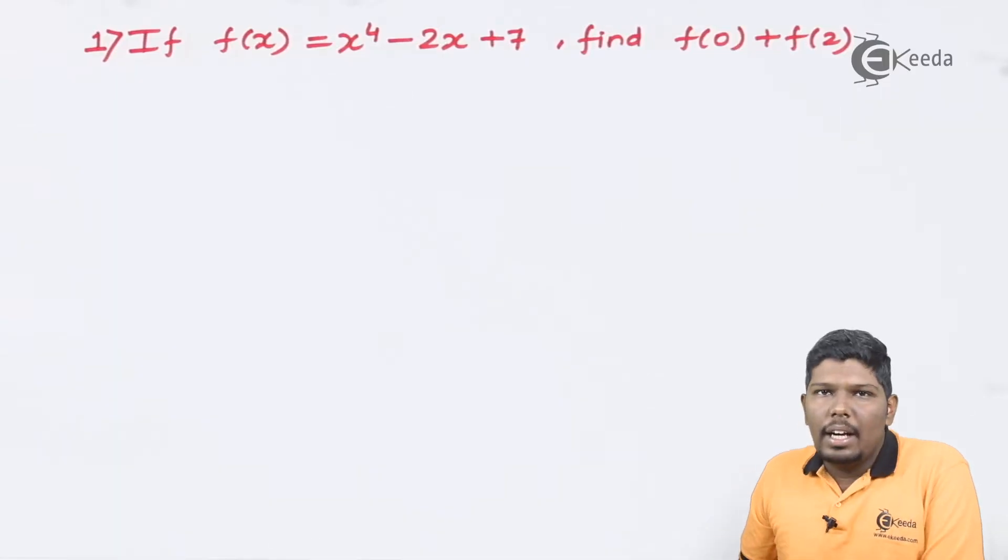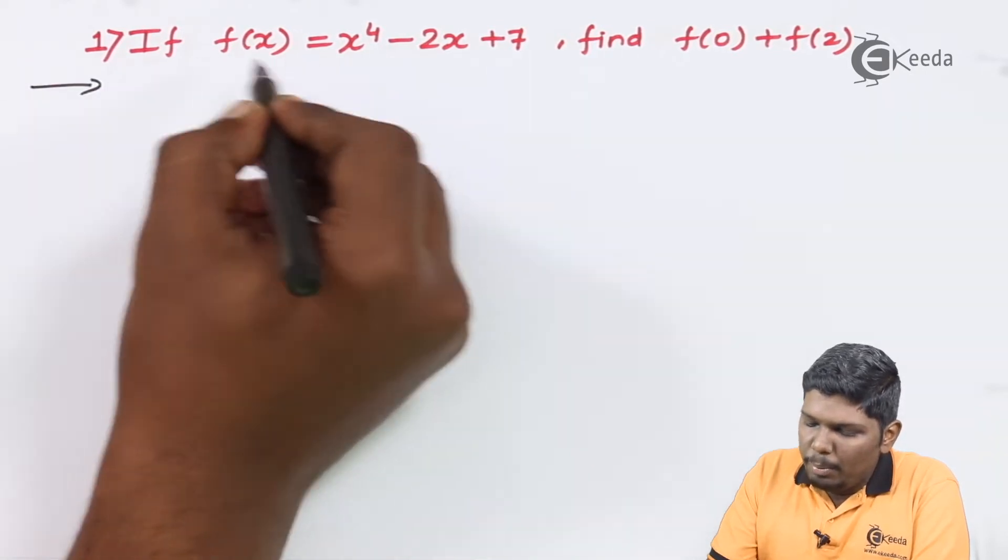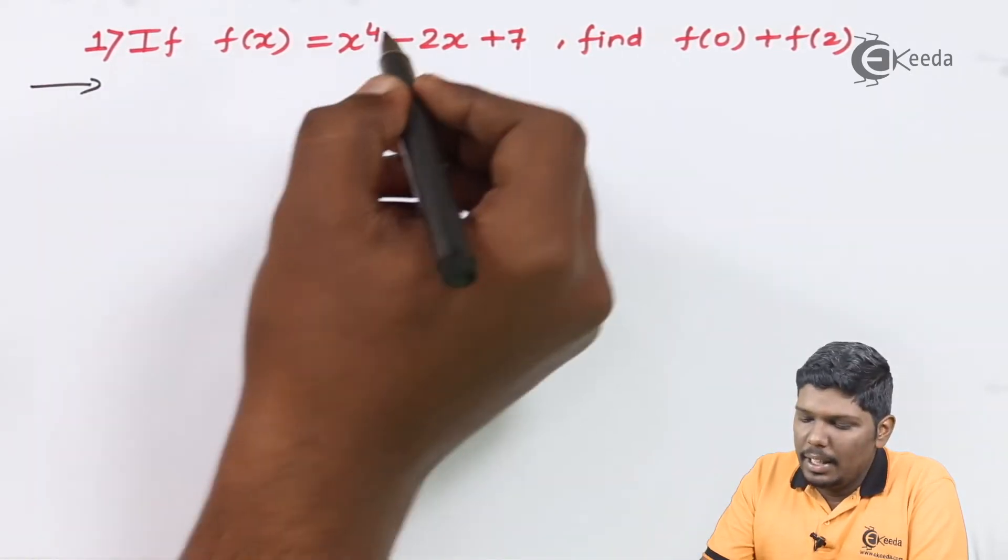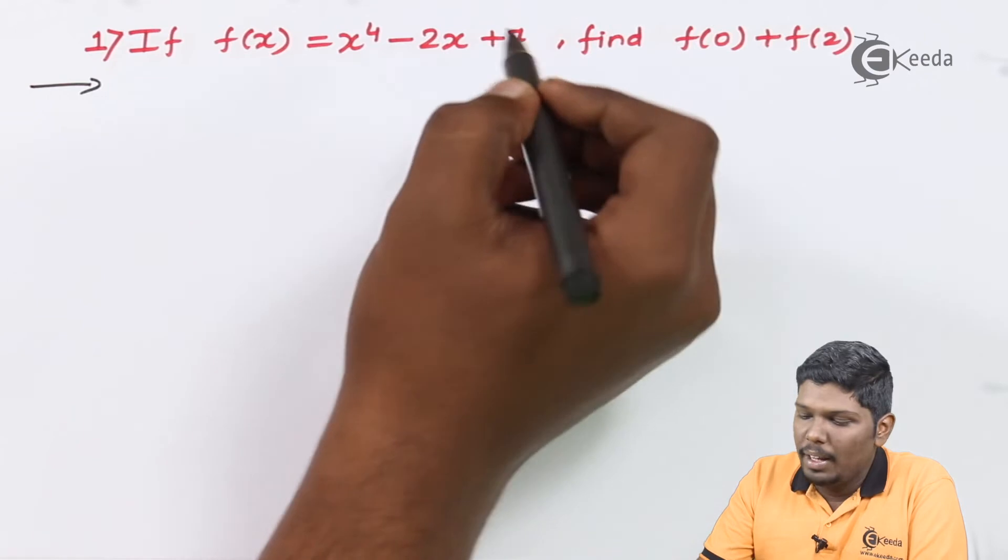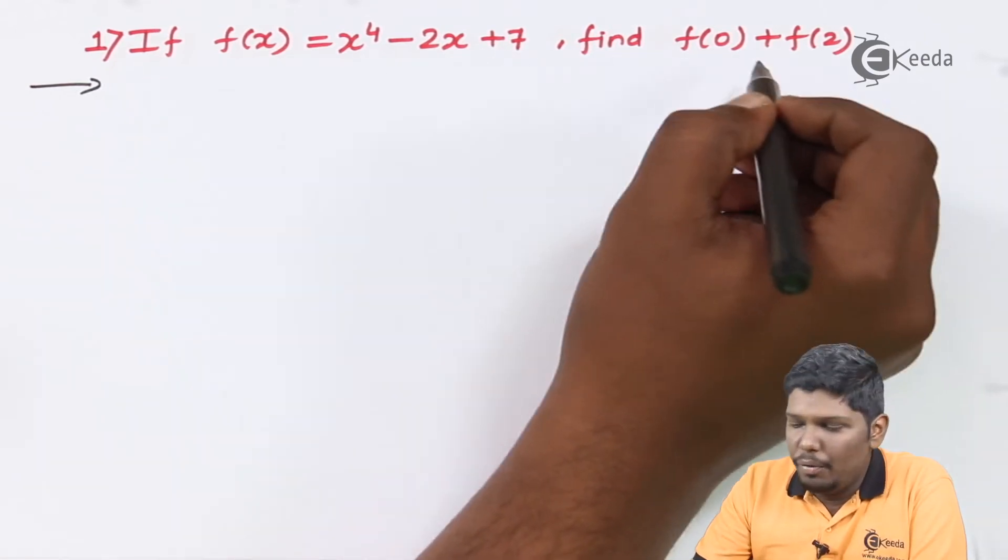Now let us start with the first numerical. If you see this problem, the problem starts with if f(x) = x^4 - 2x + 7, then find the value of f(0) plus f(2).